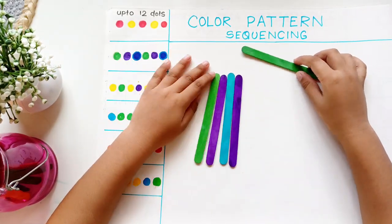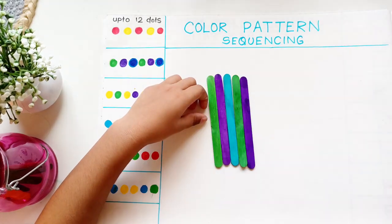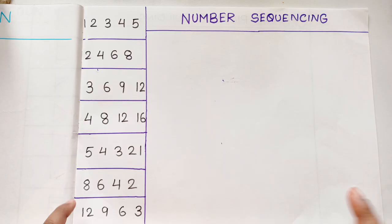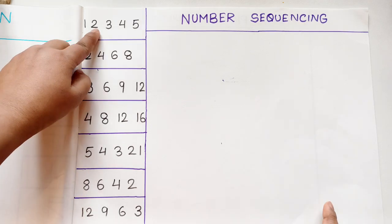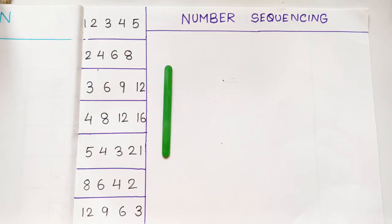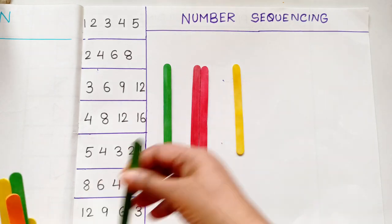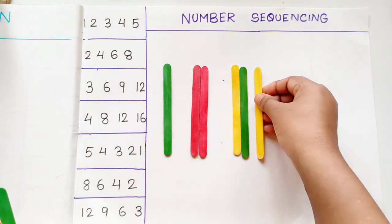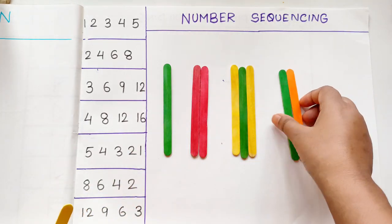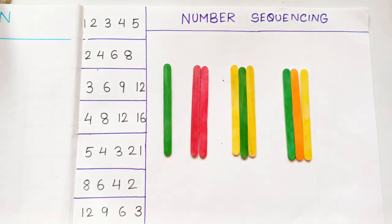The last activity is about number sequencing. Here I have written numbers like one, two, three, five, then one, two, three, four, five, and two, four, six, eight, three, six, nine, twelve. You can also use one, three, five, seven. Now the task is to match the numbers by placing the correct number of ice cream sticks next to each one.